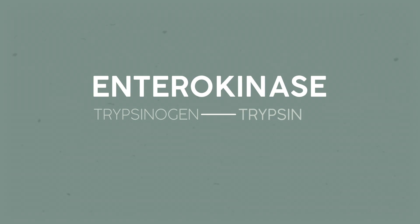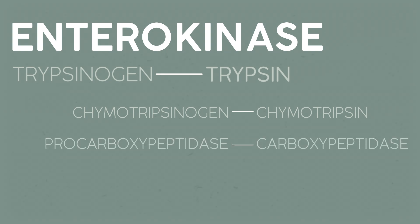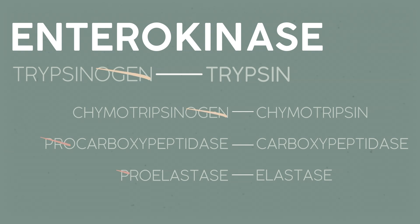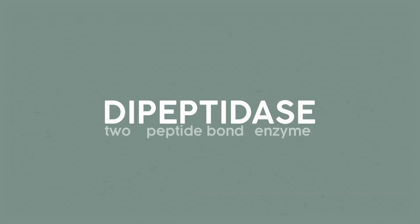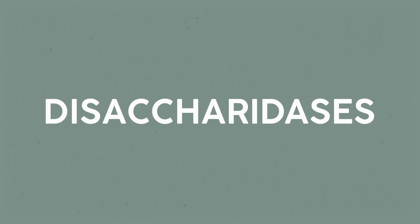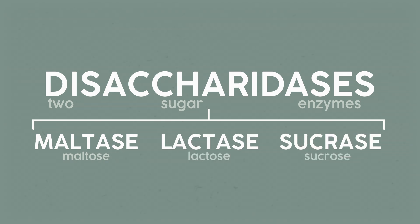First, enterokinase converts trypsinogen into trypsin. Then trypsin can convert chymotrypsinogen into chymotrypsin, procarboxypeptidase into carboxypeptidase, and proelastase into elastase. Just drop the "ogen" or "pro" and you can figure out the name for the active enzyme. A lot of these enzymes further break down the peptide bonds in proteins. The epithelial cells of the duodenum also secrete dipeptidase, an enzyme that breaks down peptide bonds in proteins, and multiple disaccharidases — enzymes that break down compound sugars into simple sugars. Like maltase is the enzyme that breaks down maltose into two glucoses, but we've also got lactase for breaking down lactose, and sucrase for sucrose.